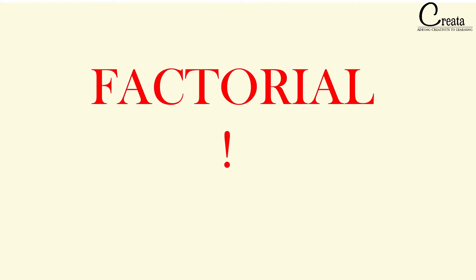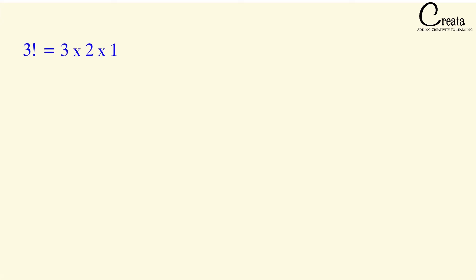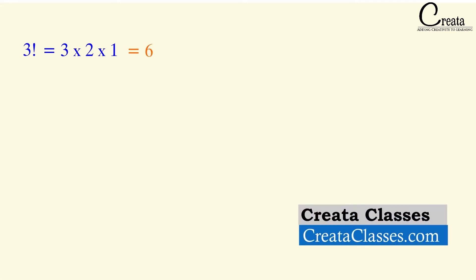This is the symbol of the factorial. What is factorial? Factorial is basically multiplying all the whole numbers from the given number down to the number 1. For example, if we take 3 factorial — 3 factorial means multiplying all the numbers from 3 down to 1. That is 3 into 2 into 1, which is 6. So 3 factorial is 6.